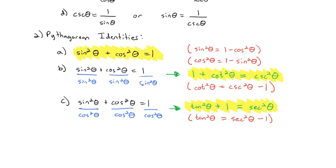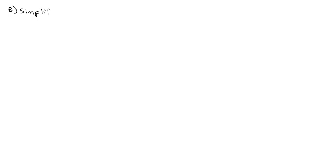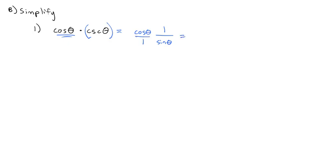So how do we use all of these reciprocal and Pythagorean identities? We use them to simplify expressions. For example, if we have cosine of theta times cosecant of theta, we can simplify it because cosecant is 1 over sine of theta. Multiplying cosine by 1 over sine gives us cosine over sine, which we recognize as cotangent of theta. So cosine times cosecant equals cotangent.